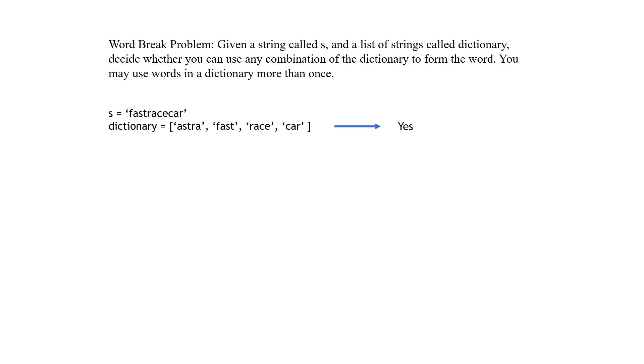Let's take a look at a few examples. In this first example, we would output yes, because we can use fast, race, and car to create the string fast race car.